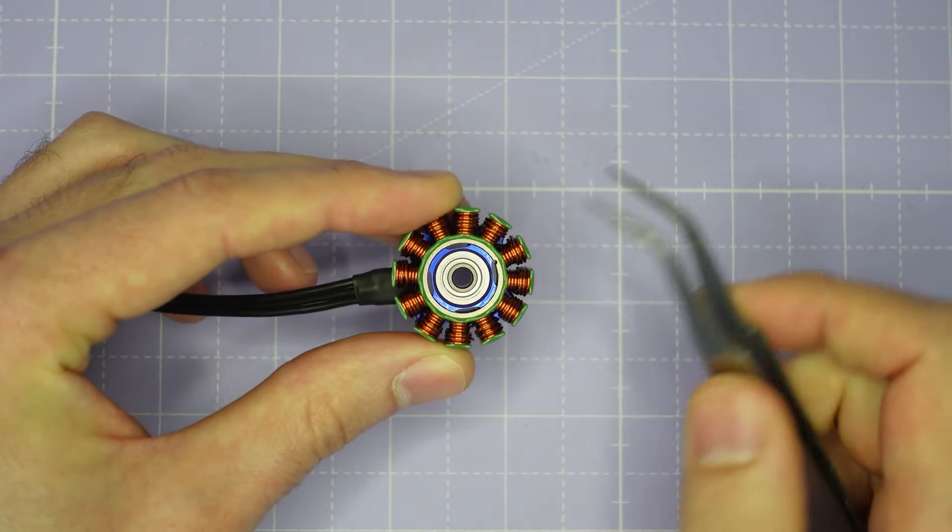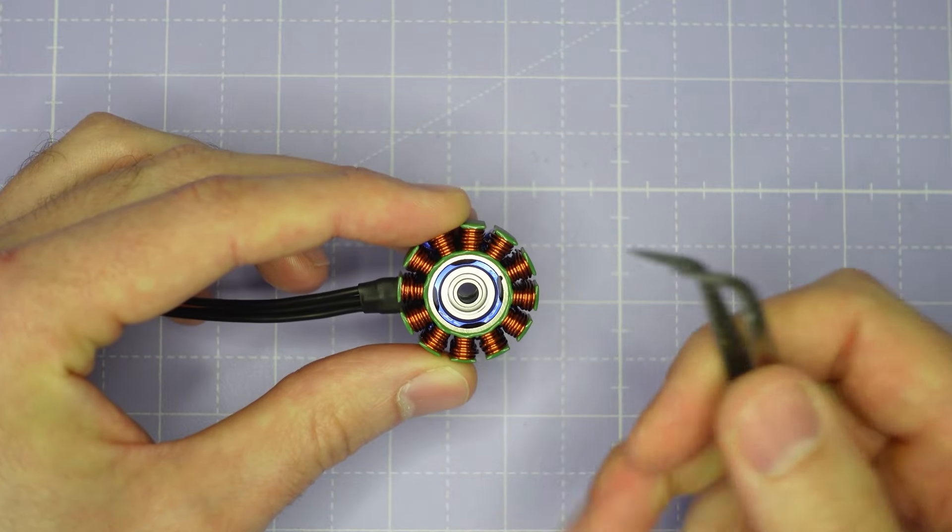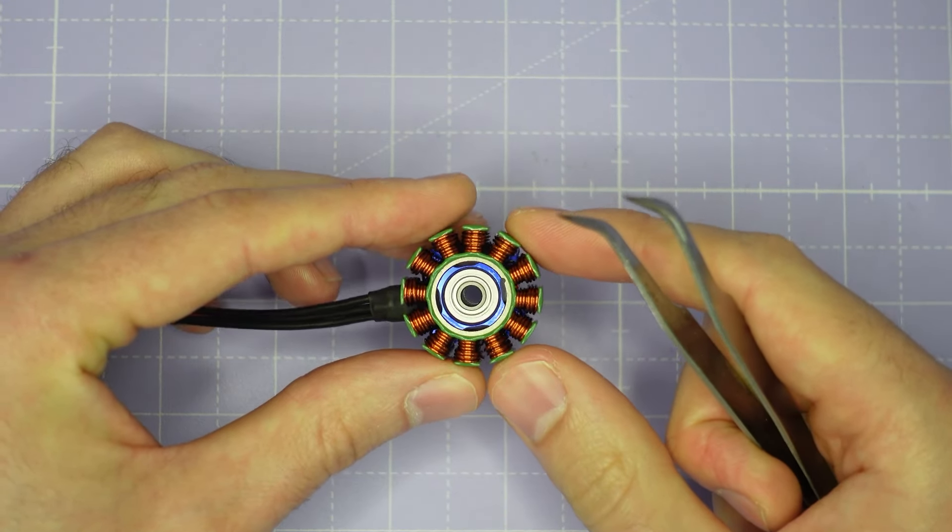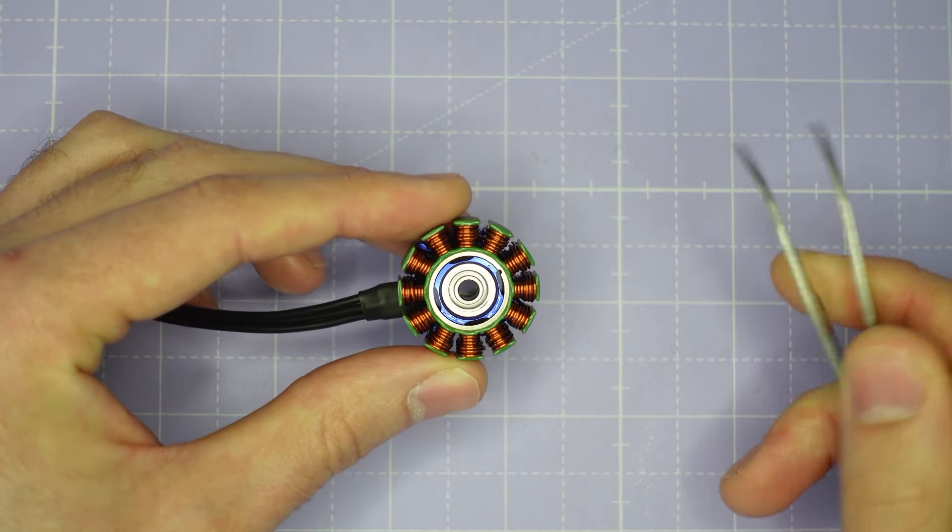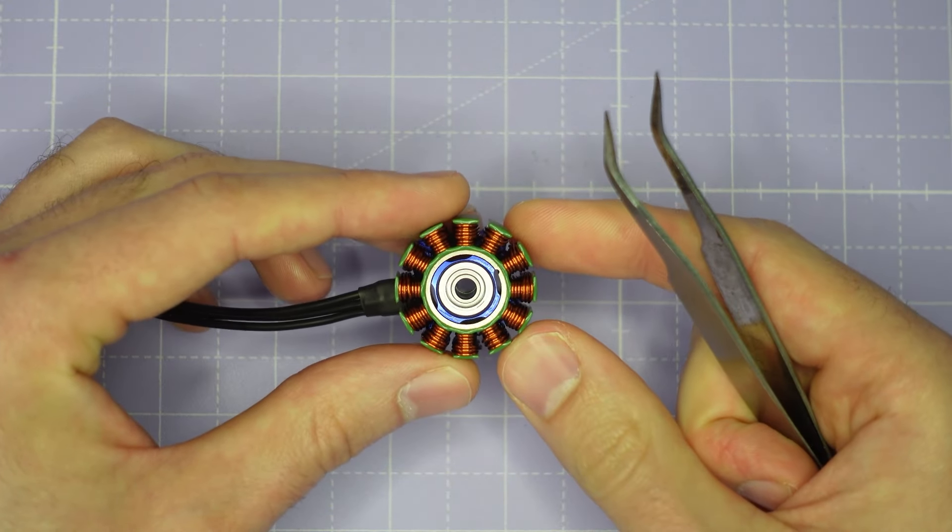So this design helps save a few tenths of a gram, helps improve the power-to-weight ratio of the motor, and it also allows us to have more flexibility on the inner diameter of the stator, which helps improve the magnetic performance of the motor.